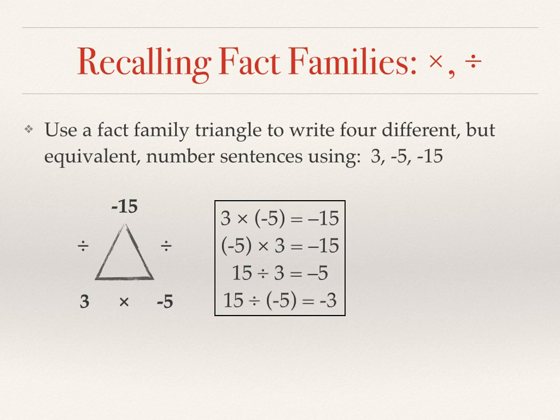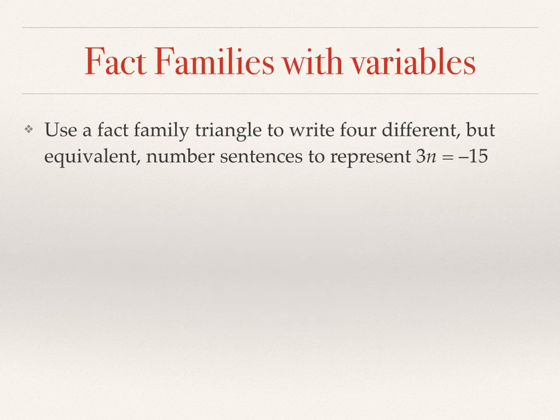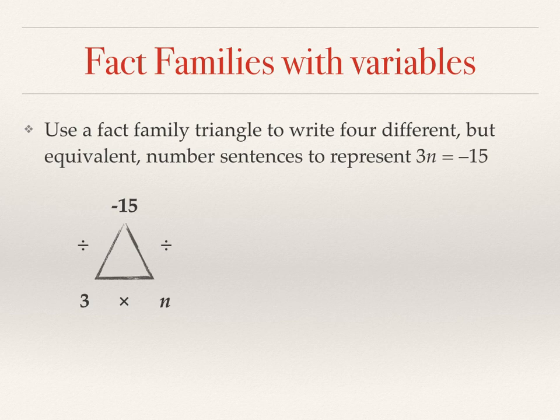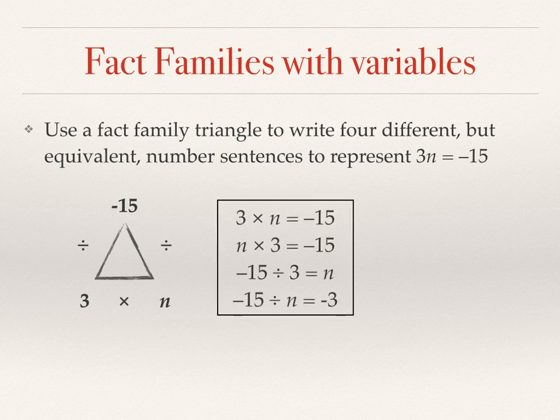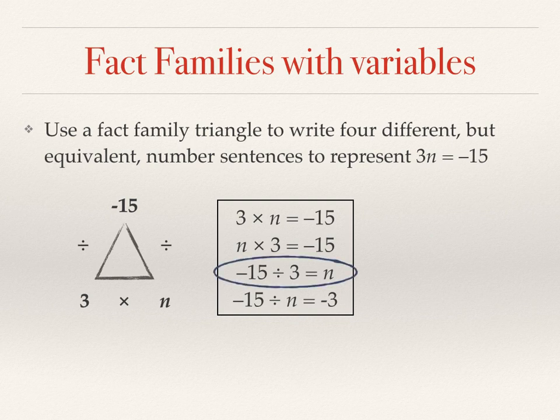So you might wonder, how does this help me with algebra? Well, because what if I gave you an equation? So instead of the 3 times negative 5 equals negative 15, I gave you 3n equals negative 15. We can see 3 is being multiplied by n, so we can set up our fact triangle. And there's going to be four equations that result from that triangle. But this time, each of the equations is going to have a variable in it. So if you wanted to solve for the variable, which equation will give you the most direct way of solving? Can you see it's the third one down? We can see that the solution then is n equals negative 5.